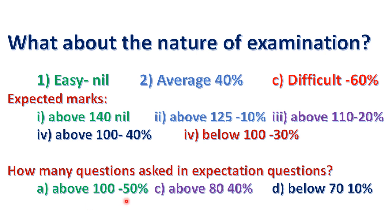The question paper has 100 questions in total. About 50% of questions are at one level, 80% is about 40%, and below 70% is about 10%.